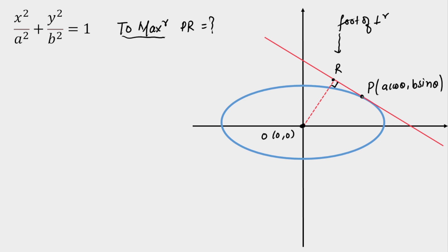The standard process is: calculate the equation of the tangent, drop a perpendicular from the origin, find the foot of the perpendicular R, then calculate the PR distance, and differentiate to maximize. That will be too long. I'll tell you an elegant way to calculate PR without even calculating the R coordinate.